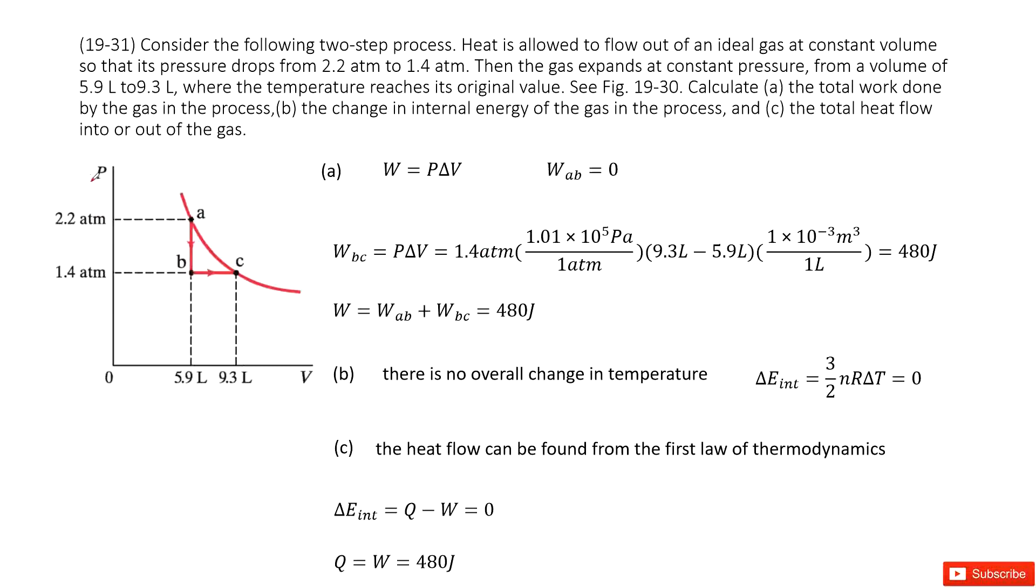So we have this P-V graph that tells us how the P and V change for this ideal gas. It moves from point A to point B to point C. The question asks you to find the total work done by the gas in the process. So from A to B to C, we can find the work done by AB, then work done by BC.